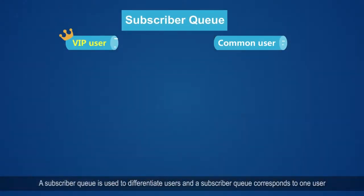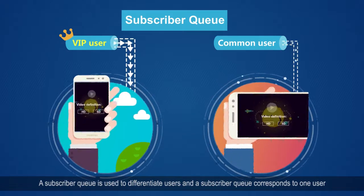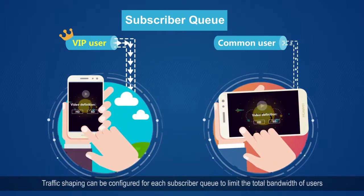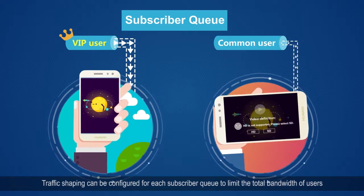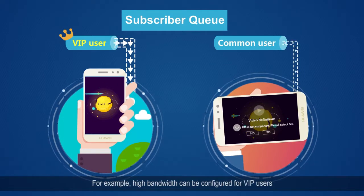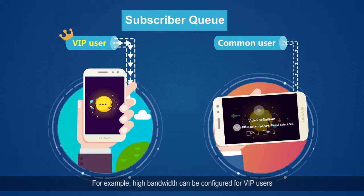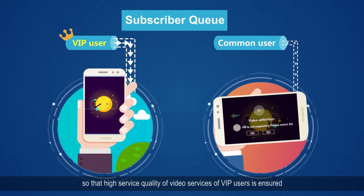A subscriber queue is used to differentiate users, and a subscriber queue corresponds to one user. Traffic shaping can be configured for each subscriber queue to limit the total bandwidth of users. For example, high bandwidth can be configured for VIP users to ensure high service quality for their video services.